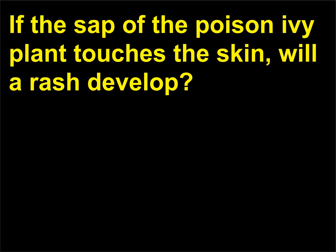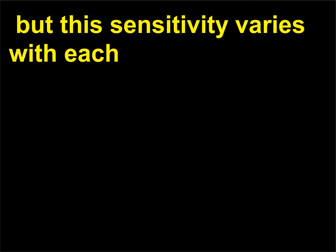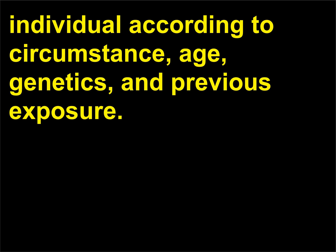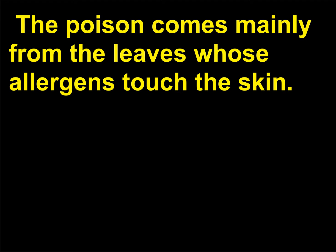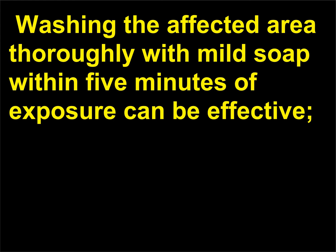If the sap of the poison ivy plant touches the skin, will a rash develop? Studies show that 85 percent of the population will develop an allergic reaction if exposed to poison ivy, but this sensitivity varies with each individual according to circumstance, age, genetics, and previous exposure. The poison comes mainly from the leaves, whose allergens touch the skin. A red rash with itching and burning will develop, and skin blisters will usually develop within 6 hours to several days after exposure. Washing the affected area thoroughly with mild soap within 5 minutes of exposure can be effective.